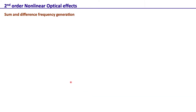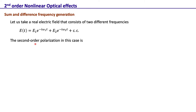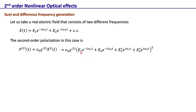Now let's look at some very basic second-order nonlinear optical effects — sum and difference frequency generation. Working with a scalar electric field consisting of two different monochromatic frequencies: E(t) = E₁e^{-iω₁t} + E₂e^{-iω₂t} + complex conjugate. If the medium has a second-order polarization, then P₂ = ε₀χ₂E²(t). Expanding the square of this two-frequency field gives 16 terms.